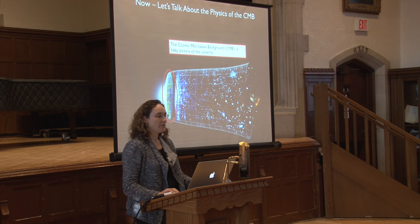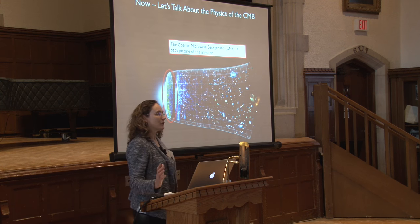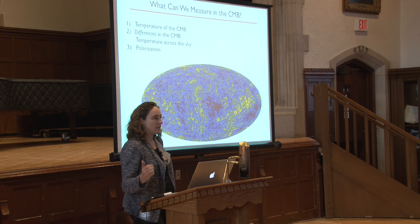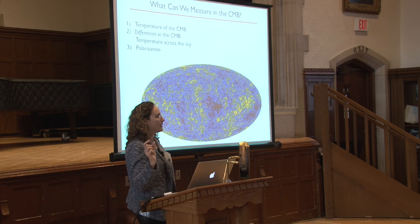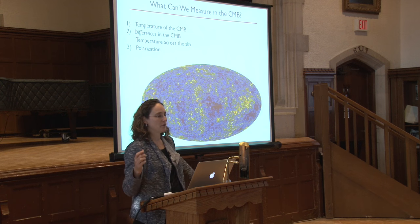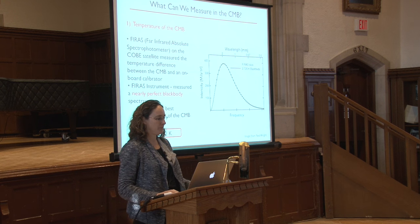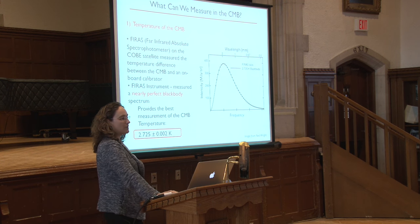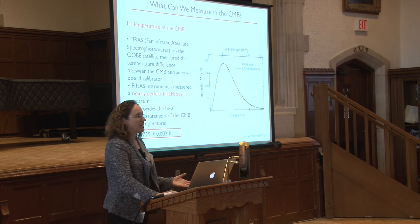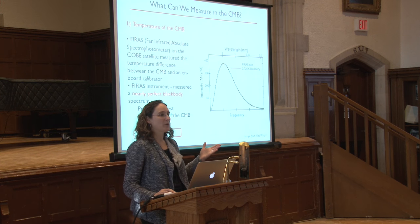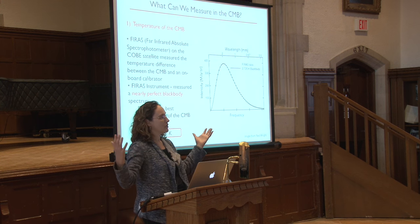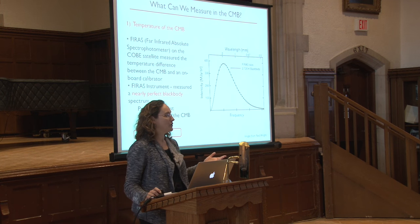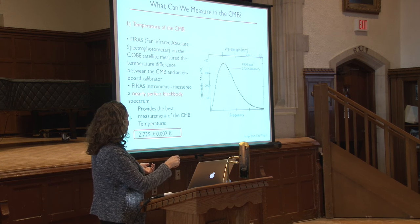The CMB is a baby picture of the universe. What can we measure? We measure temperature — the overall temperature, spatial differences in temperature, and polarization. The temperature has been characterized exquisitely well. The COBE instrument measured it to 2.725 plus or minus 0.002 Kelvin. The black body characteristic was proposed through the thought experiment of running the universe's expansion backwards in time to when it behaved like a plasma — and indeed, perfect black body radiation is what was seen.